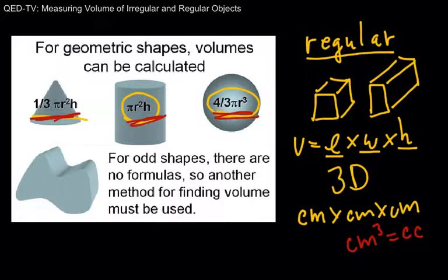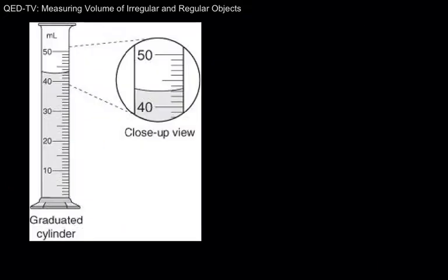So some shapes like this one here are oddly shaped and there are no formulas. So we have to use another method for finding the volume of those. And what we're going to use for those is we're going to use what we call a graduated cylinder.